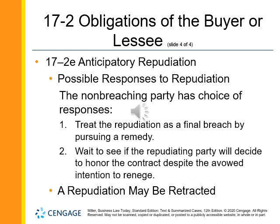Anticipatory repudiation. If, before the time for a promisor's performance, he clearly communicates to the promisee his inability or intention not to perform, the promisee may treat the repudiation as a breach and cancel the contract, treat the repudiation as a breach and sue, or wait and see if the repudiating party retracts his repudiation and performs as called for. In any case, the non-repudiating promisee may suspend her own performance until the repudiating promisor performs. At any time before the non-repudiating promisee materially changes her position in reliance on the repudiation, the repudiating promisor may retract his repudiation and perform as promised.